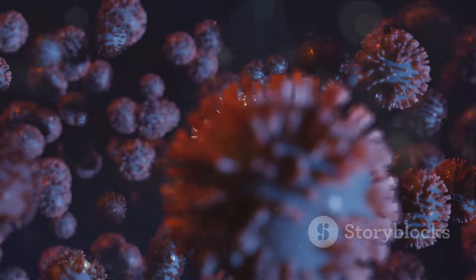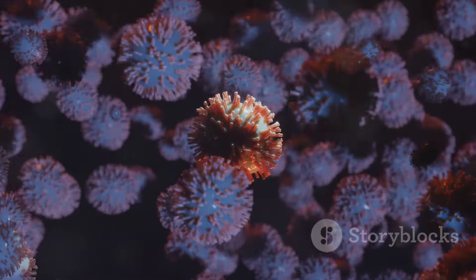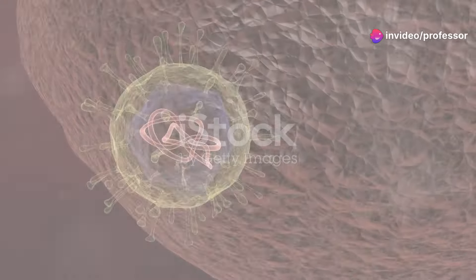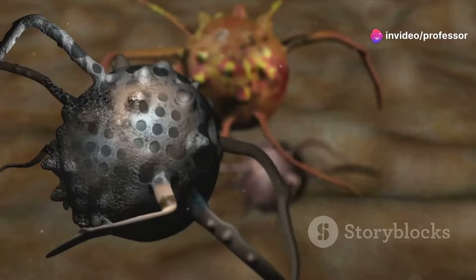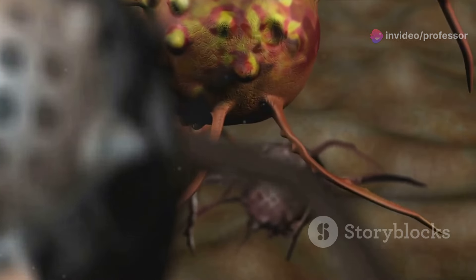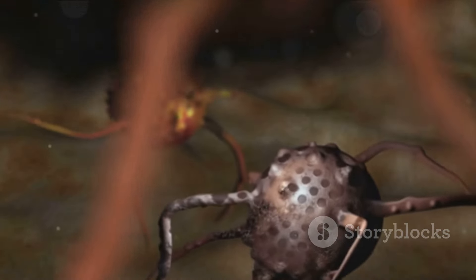Now inside, the real trouble begins as the virus hijacks the cell's machinery. Imagine a pirate taking over a ship. That's what the coronavirus does to your cells. Once inside, the virus acts like a cunning intruder, unloading its RNA into the cell's nucleus.